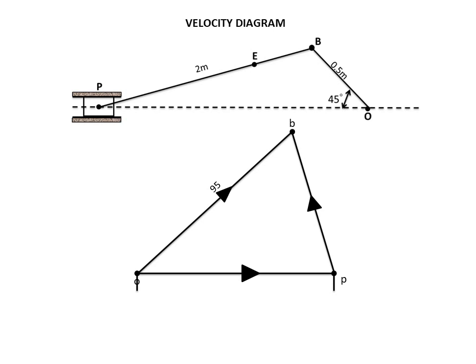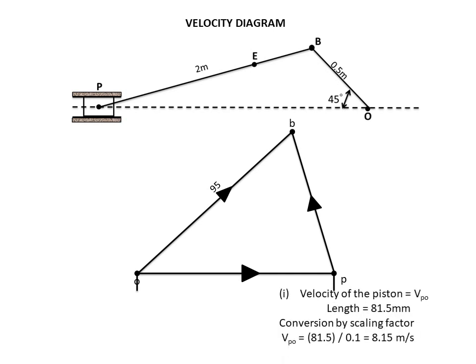Mark the directions in the velocity diagram. Now measure the length of the oP line for the first question: what is the velocity of the piston? Measure the length of this line and multiply by the scaling factor to get the piston velocity. The length measures 81.5 mm. Multiplying by the scaling factor of 0.1: 81.5 × 0.1 = 8.15 m/s. The velocity of the piston is 8.15 m/s.